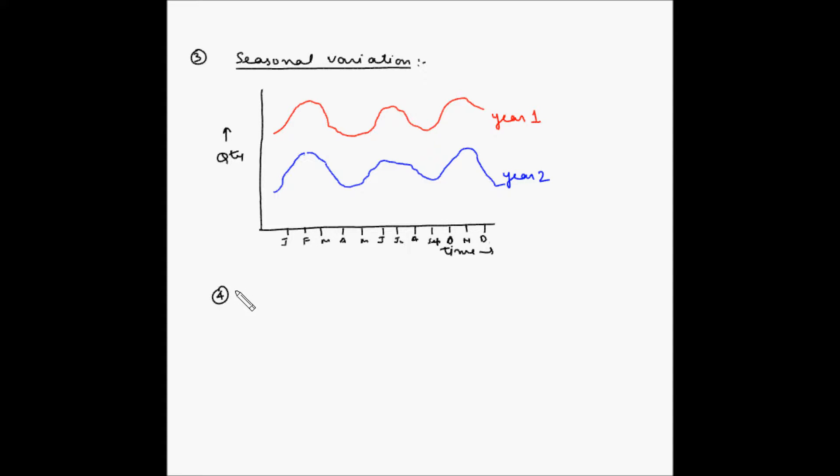The fourth component is cyclical movements. Cyclical movements are oscillatory movements of demand over longer duration of time than a year. So let's draw the graph. This is time and quantity, and this is in years. So this is 1, 2, 3, 4, 5, 6, 7, 8 and so on. And the cyclical movement will be something like this.